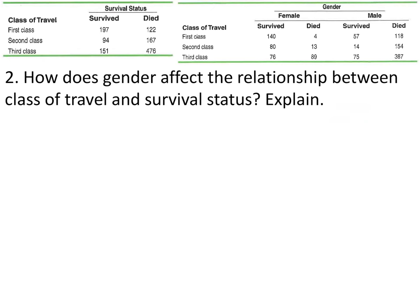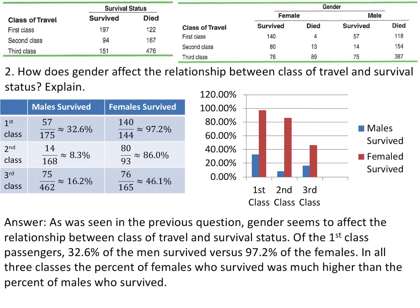How does gender affect the relationship between class of travel and survival status? As seen in the previous example, gender seems to affect the relationship between class of travel and survival status. Of the first class passengers, 32.6% of men survived versus 97.2% of the females — females definitely had a better survival rate. In all three classes, the percent of females who survived was much higher than the males, but the percent of females fell with each class.